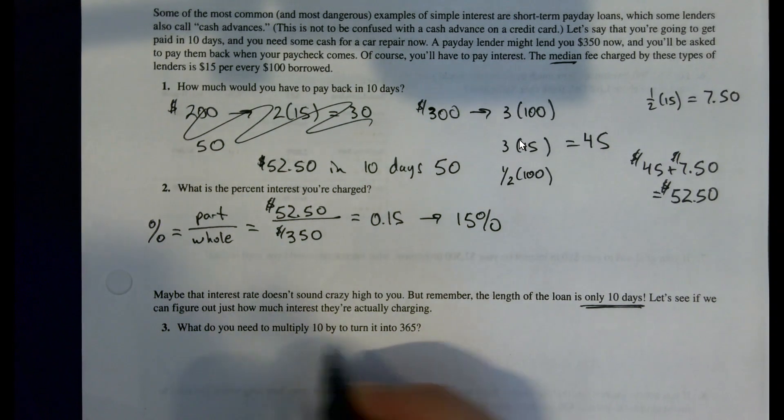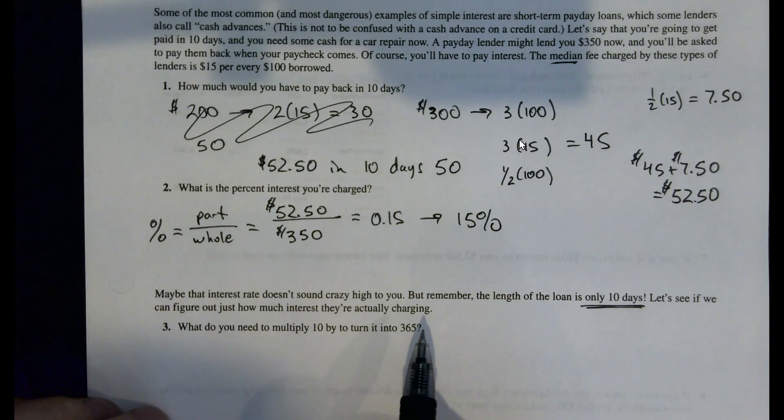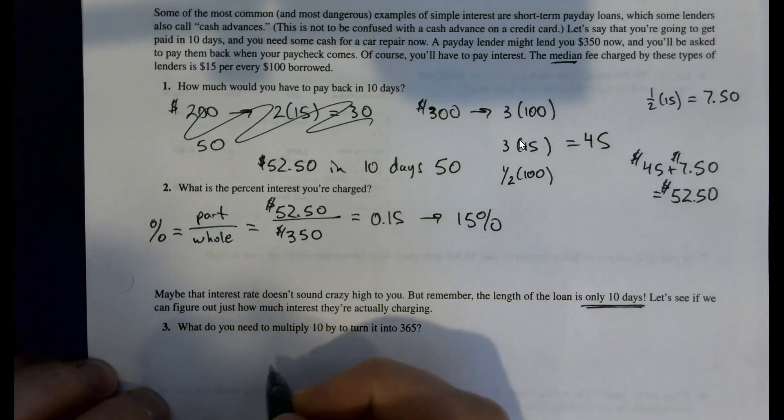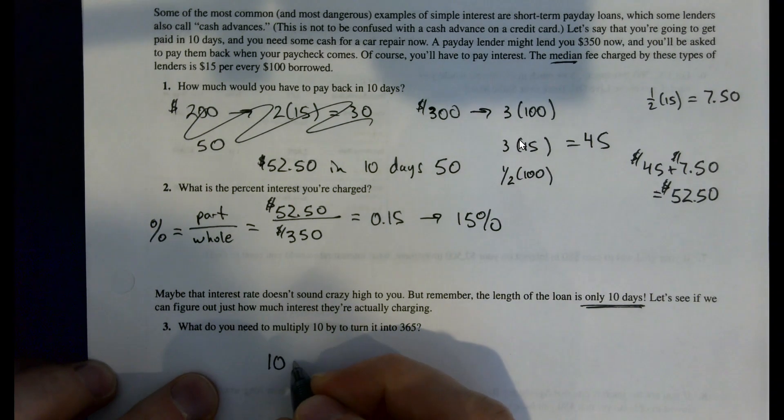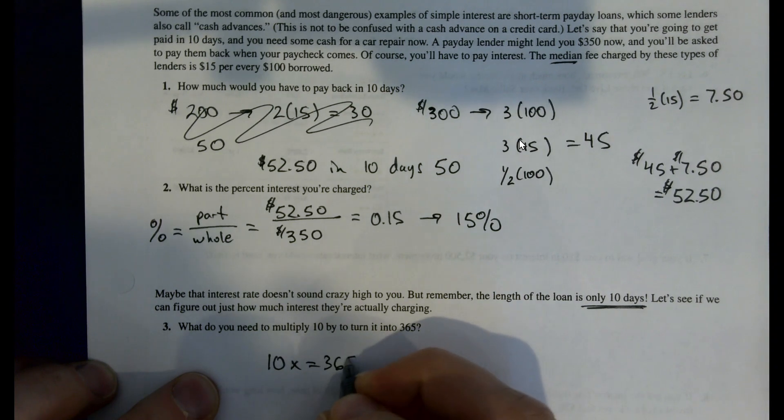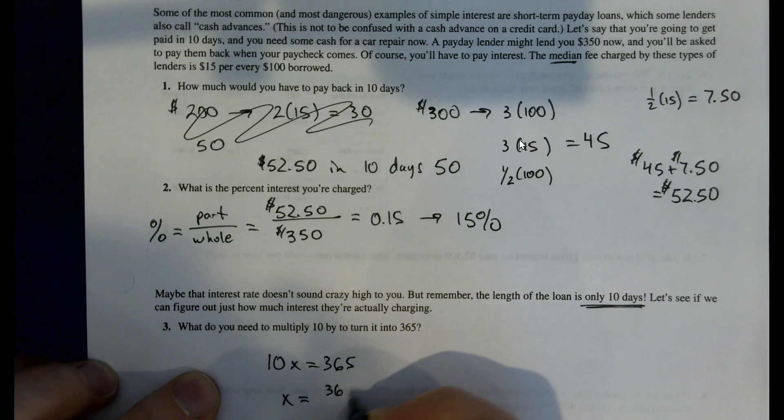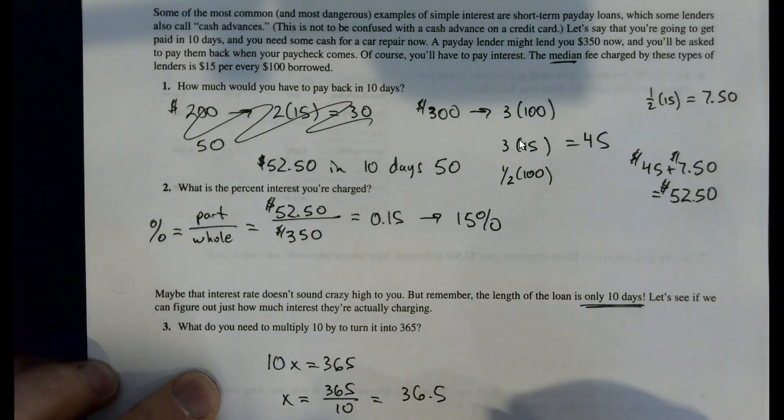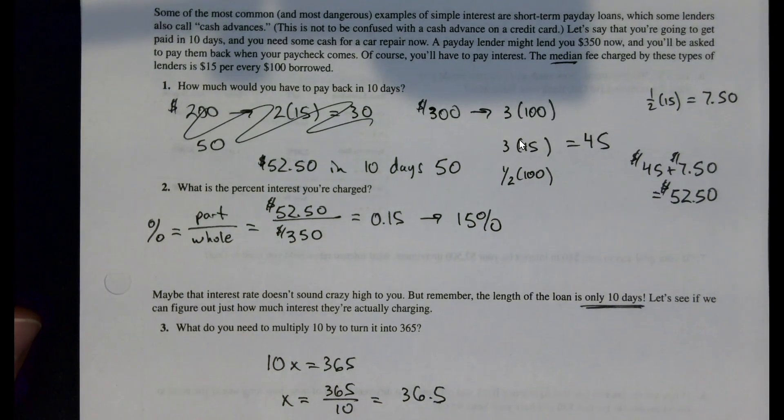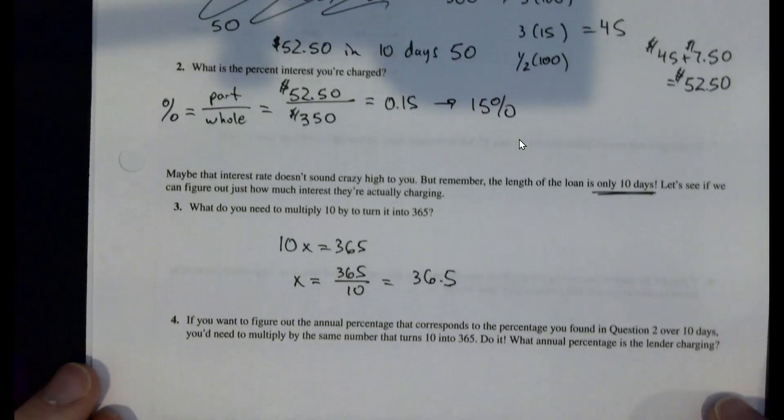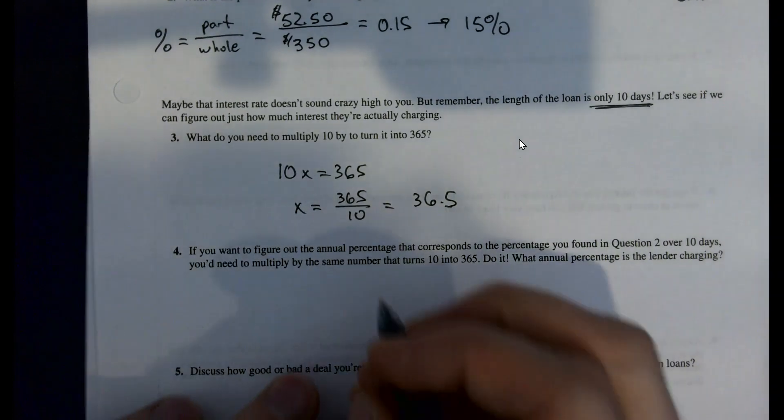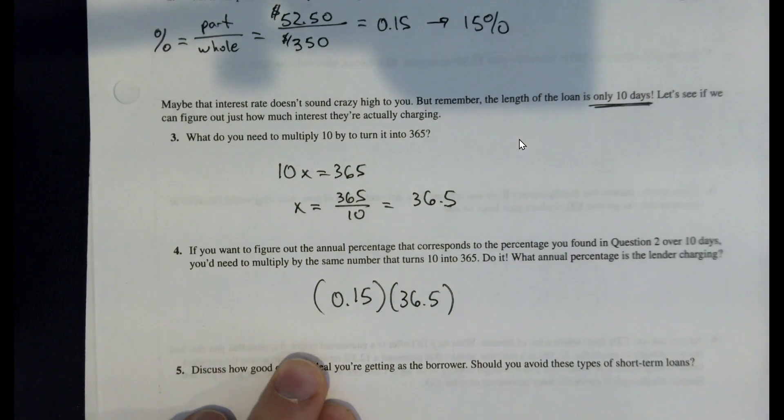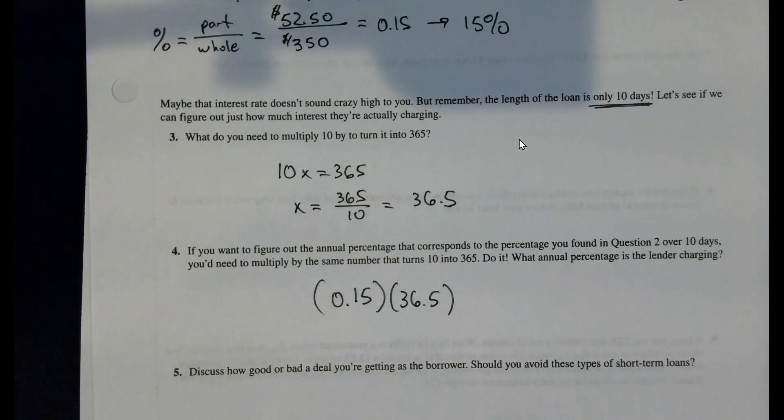What do we have to multiply 10 by to turn it into 365? In other words, what is this as a yearly interest rate? So 10 times what equals 365? That's going to be 36.5. So there's 36.5 multiples of that in a year, which means what we need to do is take our 0.15 interest rate and multiply it by 36.5, and this will get our annual interest rate.